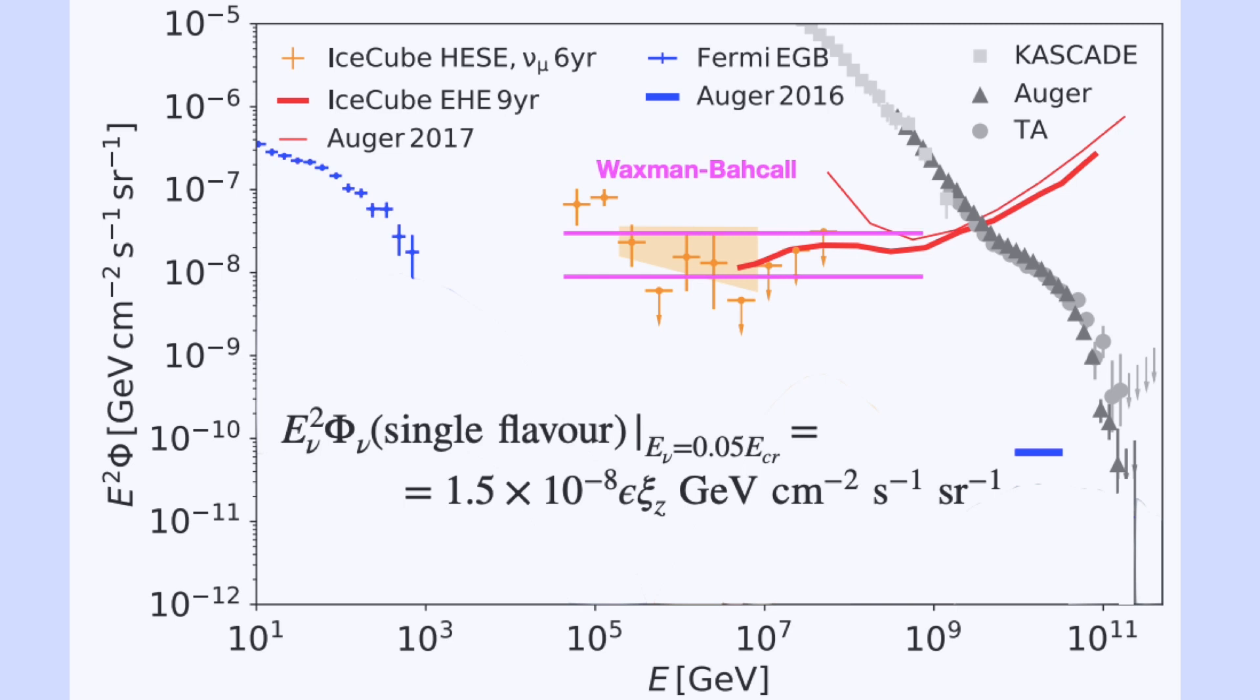We can see that the majority of these data points lie within the Waxman-Bahcall bounds. Is this a coincidence, or can the neutrinos observed at IceCube be coming from cosmic rays?